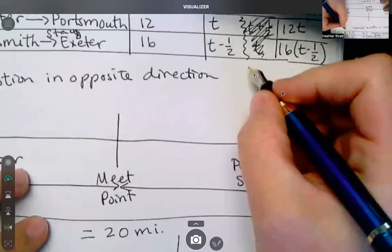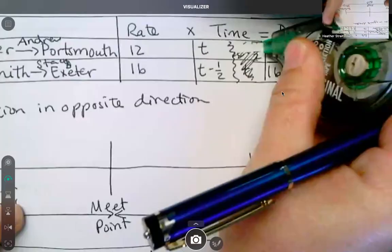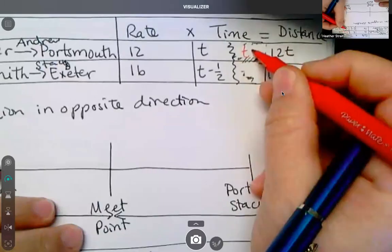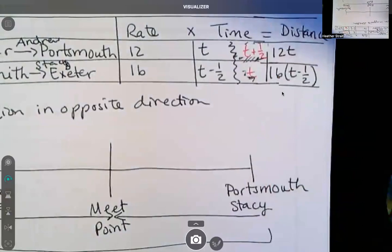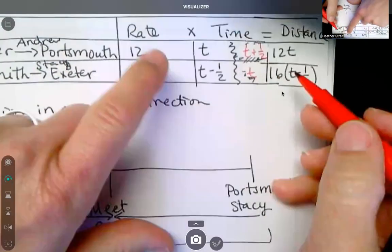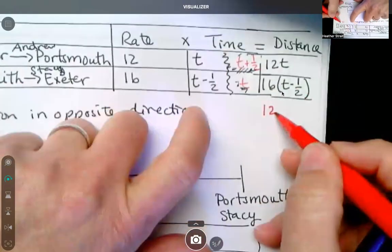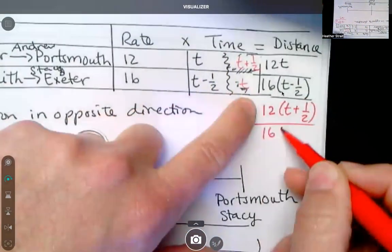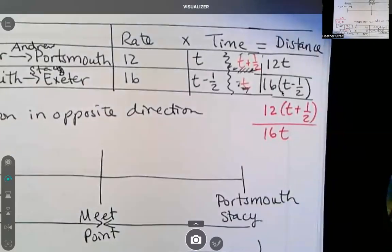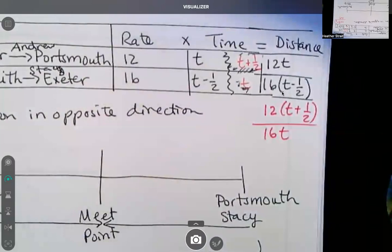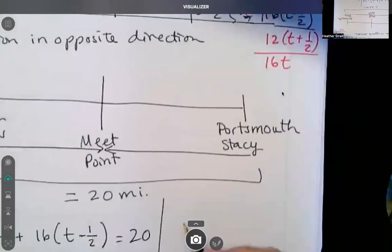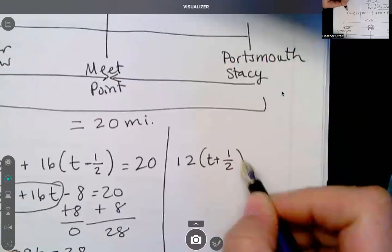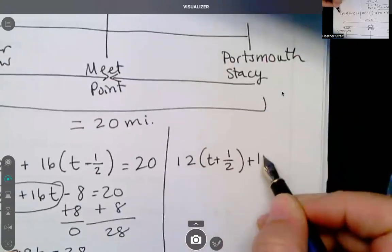So now we're going to do this. T plus a half and T. So now let's do this one. T plus one half and he's T. So now let's do 12 times T plus one half and 16T. It's just going to work out the same. Did you guys solve it and get one? Oh, I got a half. Okay. So 12T plus 6 plus 16T equals 20.